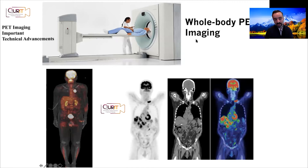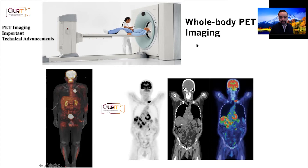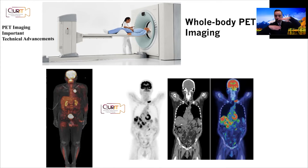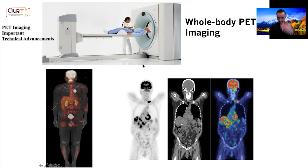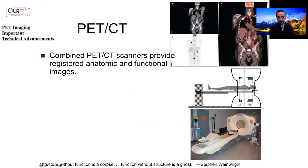PET imaging is now very common in clinical oncology in a whole-body sense. A typical axial field of view is 15 to 25 centimeters, which cannot cover the whole body in one acquisition. Therefore, multiple bed positions — typically six to eight beds — are used, either in a step-and-shoot mode or with continuous bed movement, to achieve a whole-body image.